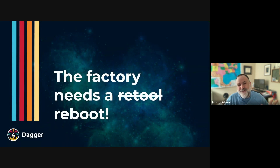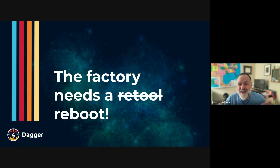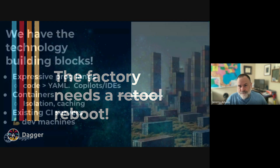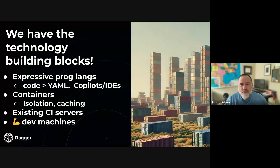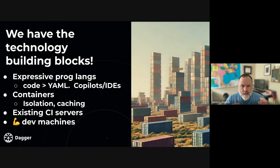Our factory has gotten off track. We need to retool the factory, but luckily we're working with software here — not an actual physical factory. We can just reboot our factory; it's just software, we can change it. And we have all the building blocks we need, though today they're often not coordinated together in the best way — they're in some silos. So let's take inventory of what we have.